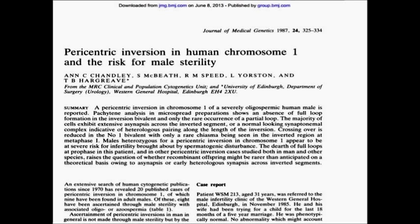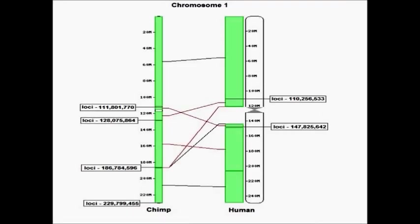We're going to go over a few examples, starting with chromosome 1. Here's a study that shows paracentric inversions in human chromosome 1 and the risk for male sterility. Of course, when you go to look at a comparative analysis between humans and chimpanzees, you see just such a chromosomal inversion — a paracentric inversion between them.